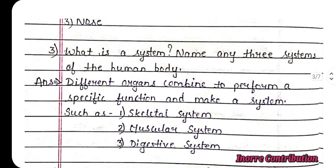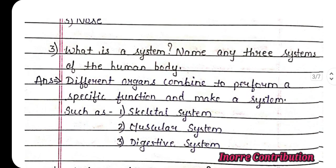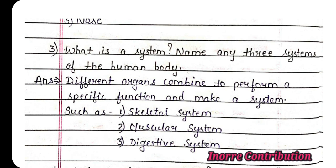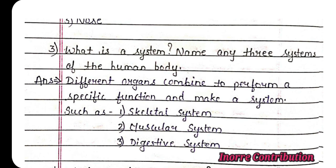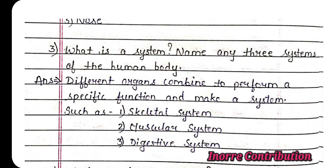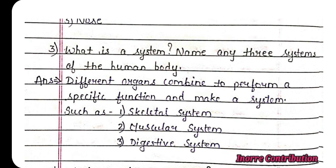Third question: What is a system? Name any 3 systems of the human body. Answer: Different organs combine to perform a specific function and make a system. Such as skeletal system, muscular system, and digestive system.